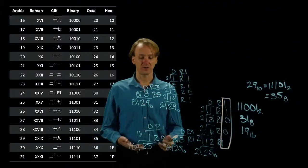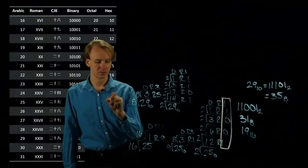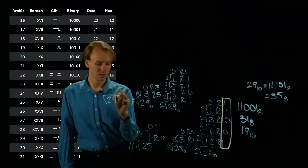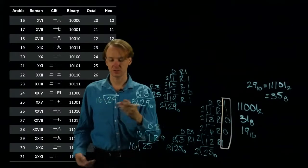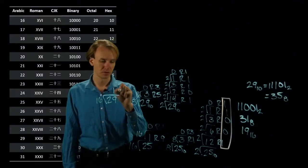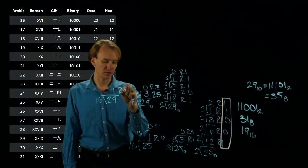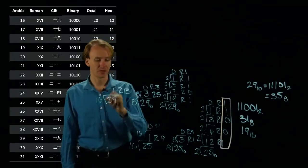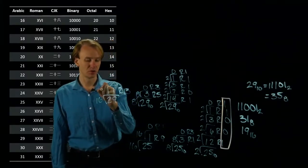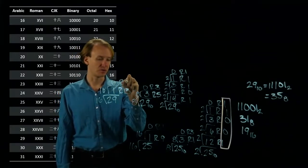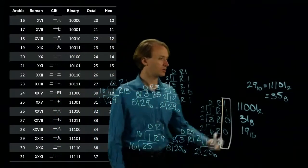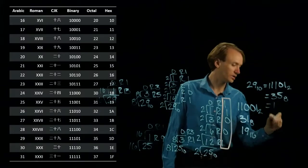Finally, if I do this again for hexadecimal, 16 goes into 29 once and I have a remainder of 13. Now 16 goes into 1, 0 times, remainder of 1. So I want to write down 1, 13.